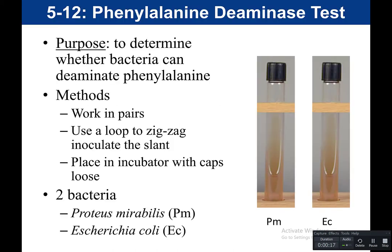The purpose of the phenylalanine deaminase test is to determine whether bacteria can deaminate phenylalanine. In the last video, we talked about decarboxylation, meaning that bacteria will remove the carboxyl group from an amino acid. In this case, we're now looking at deamination, which is the removal of the amino group from the amino acid.